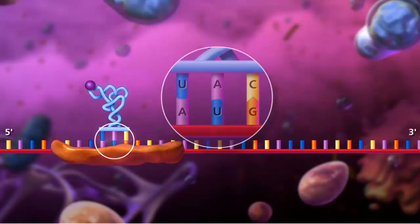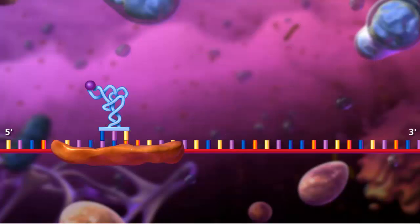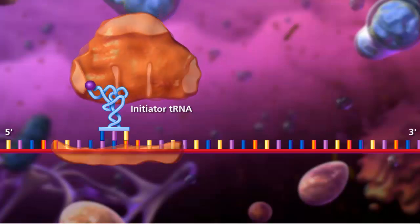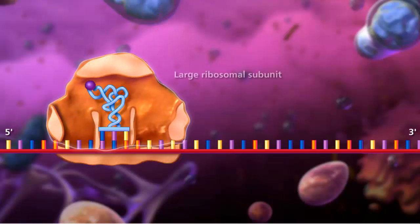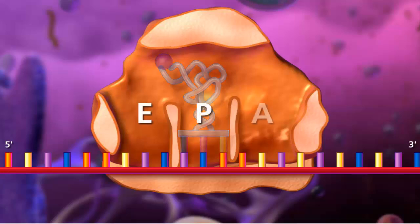A complementary base pairing occurs between the codon of the messenger RNA and the anticodon of the transfer RNA. After the initiator transfer RNA molecule binds to the start codon, the large ribosomal subunit binds to form the translation complex and initiation is complete. In the large ribosomal subunit, there are three distinct regions called the E, P, and A sites.